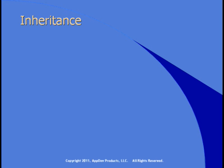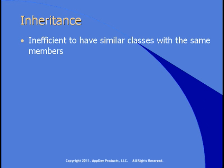You have a couple of options. On the one hand, you could take the customer class, copy it, and make an individual customer class. But the problem is that now you'll have two classes with similar members — properties that are the same, methods that are the same. And if they exist in both classes, now you have a maintenance issue: duplicated code. If you make a change to the recordSales method in the customer class, you'll also have to make the same change in the individual customer class.